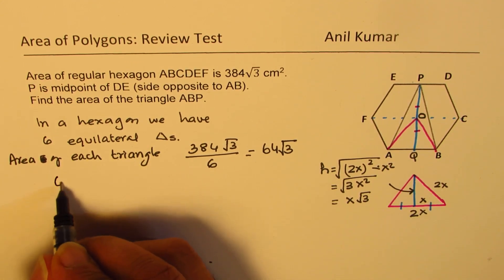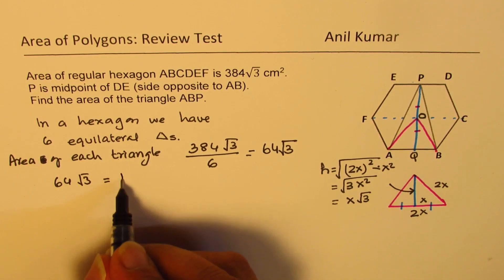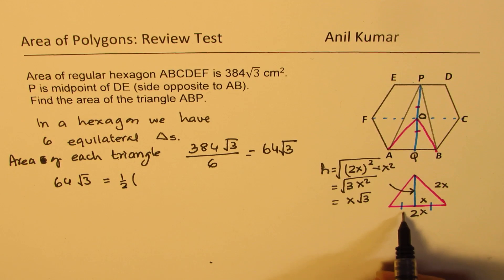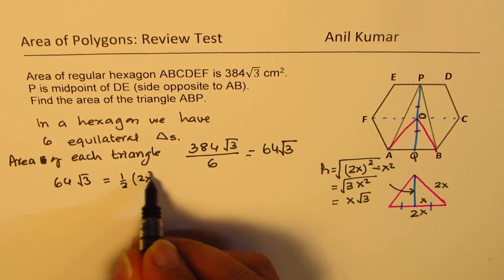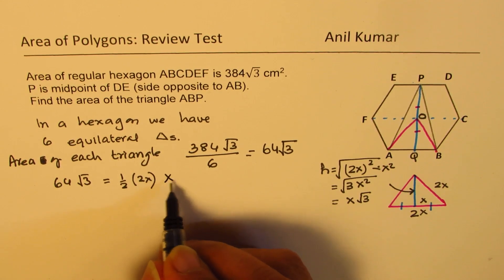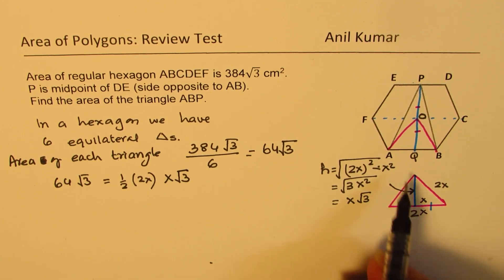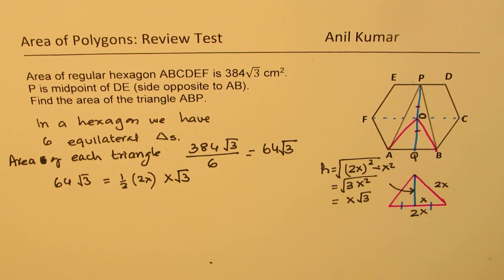We could equate this 64√3 to area of a triangle, which is half of base (base is 2x) times height, which is x√3. And from here, we can find side lengths. That is the whole idea.